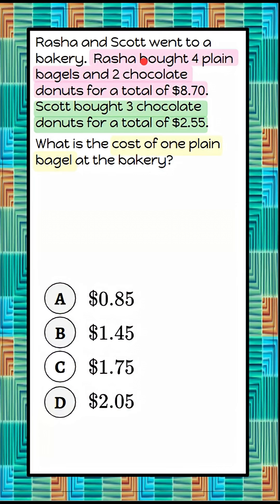So we're going to write two equations, one to represent Rasha and one to represent Scott, and then we will solve our system. So first I want to define some variables.